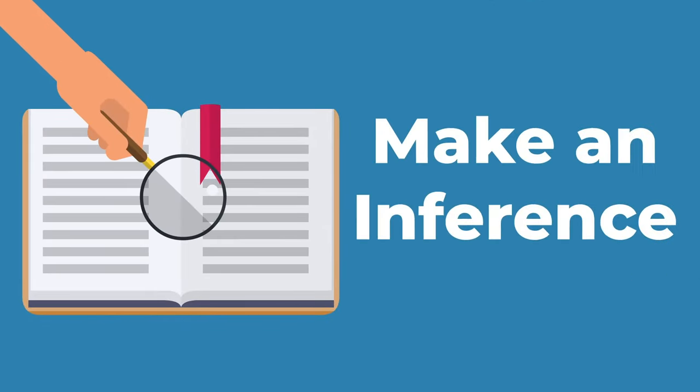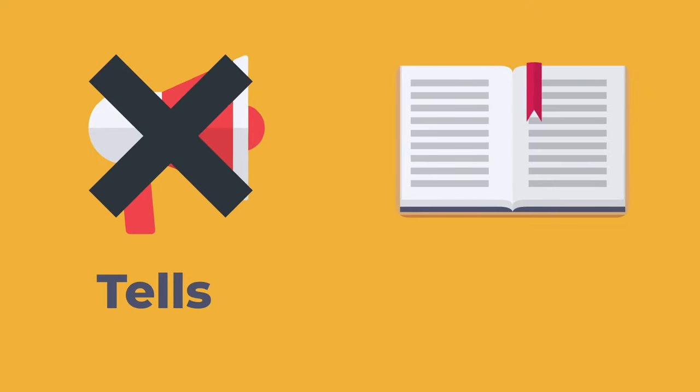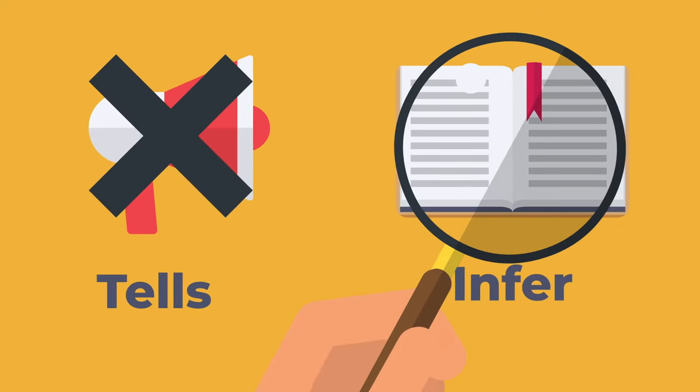Notice the author never said that the student was nervous. The author wants us to infer that. Sometimes the author doesn't tell us what's happening but they want us to know based on the actions of the character. This is when you want to make an inference.